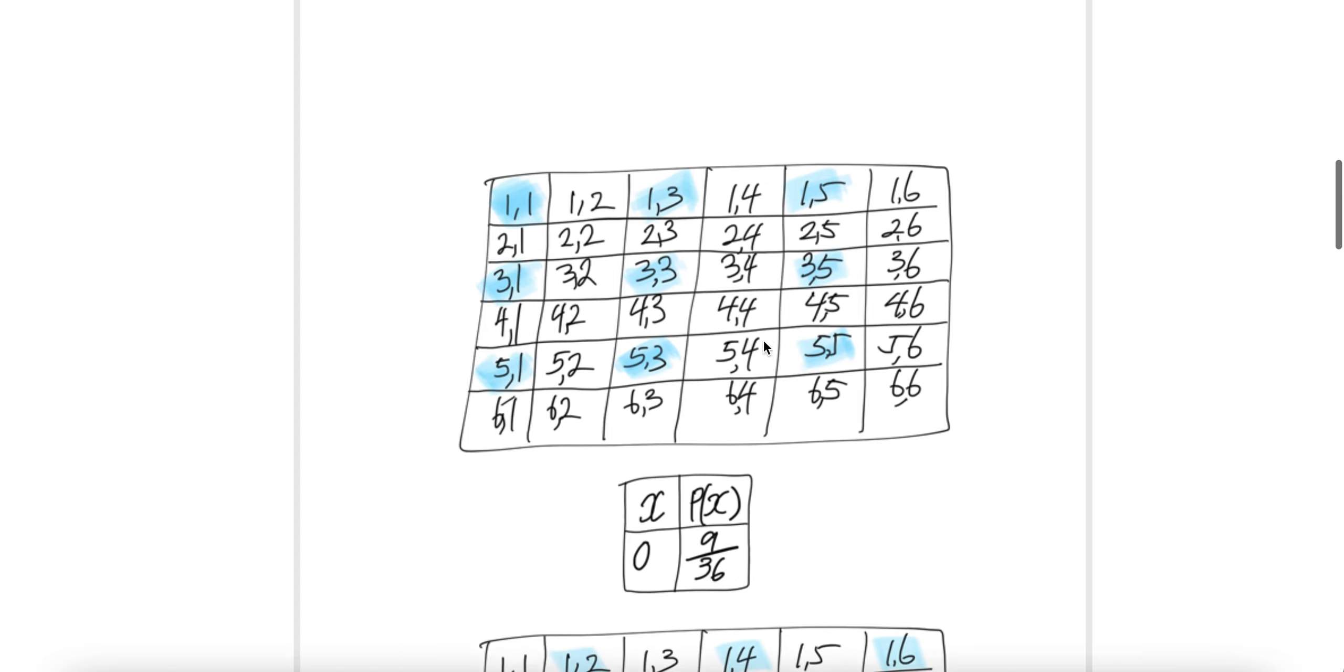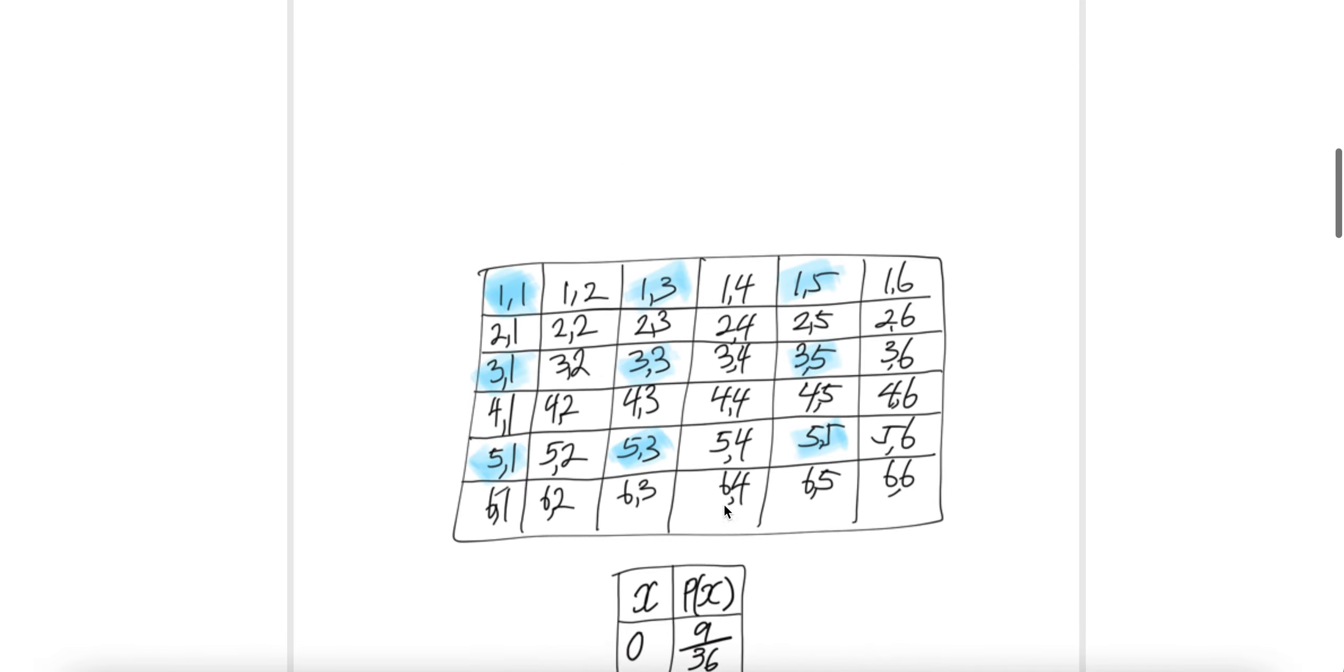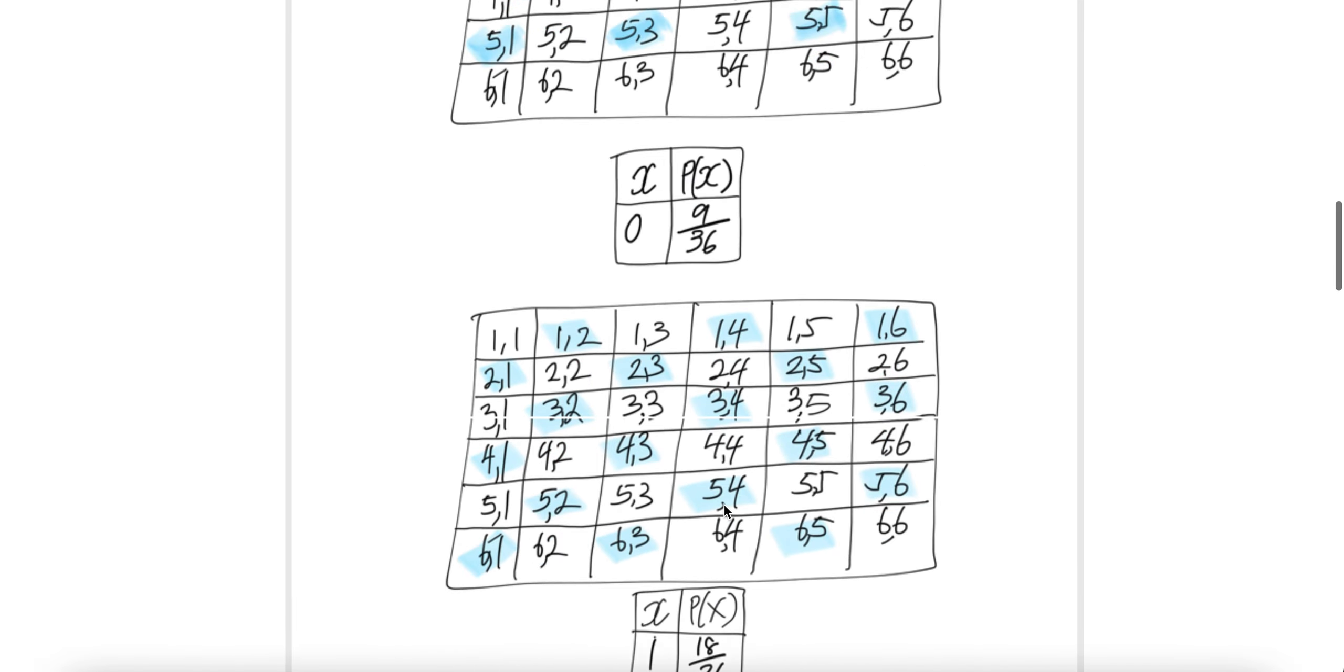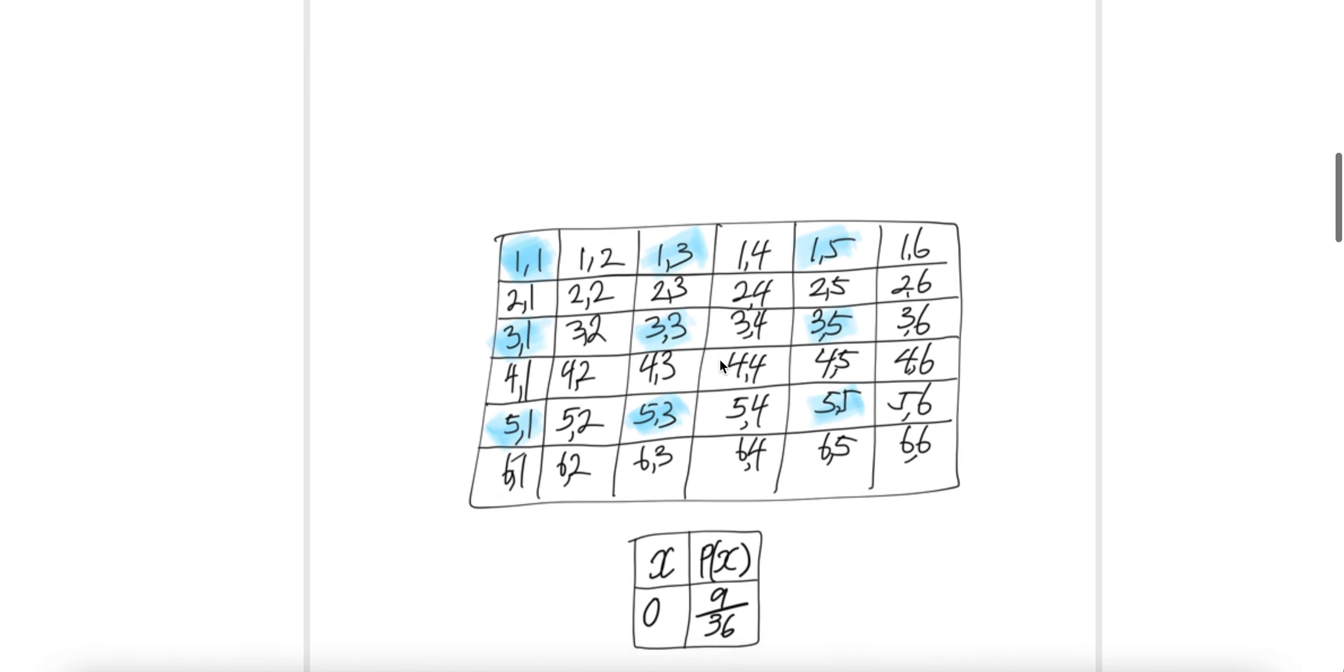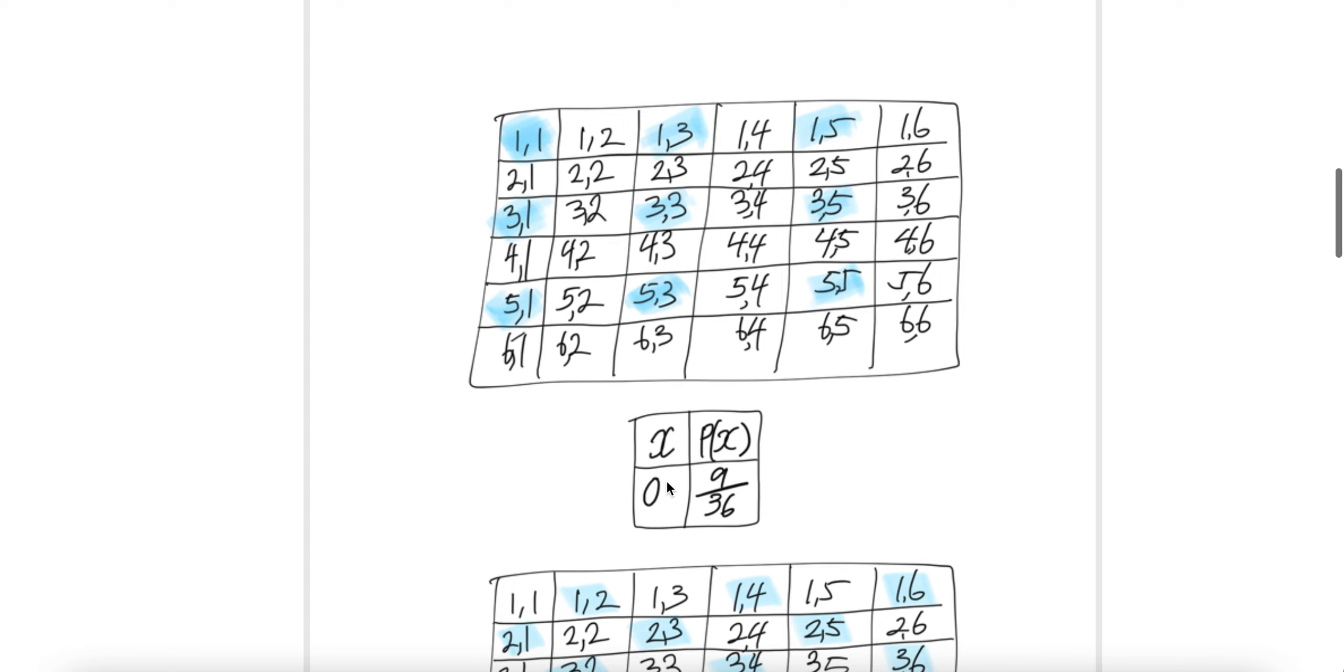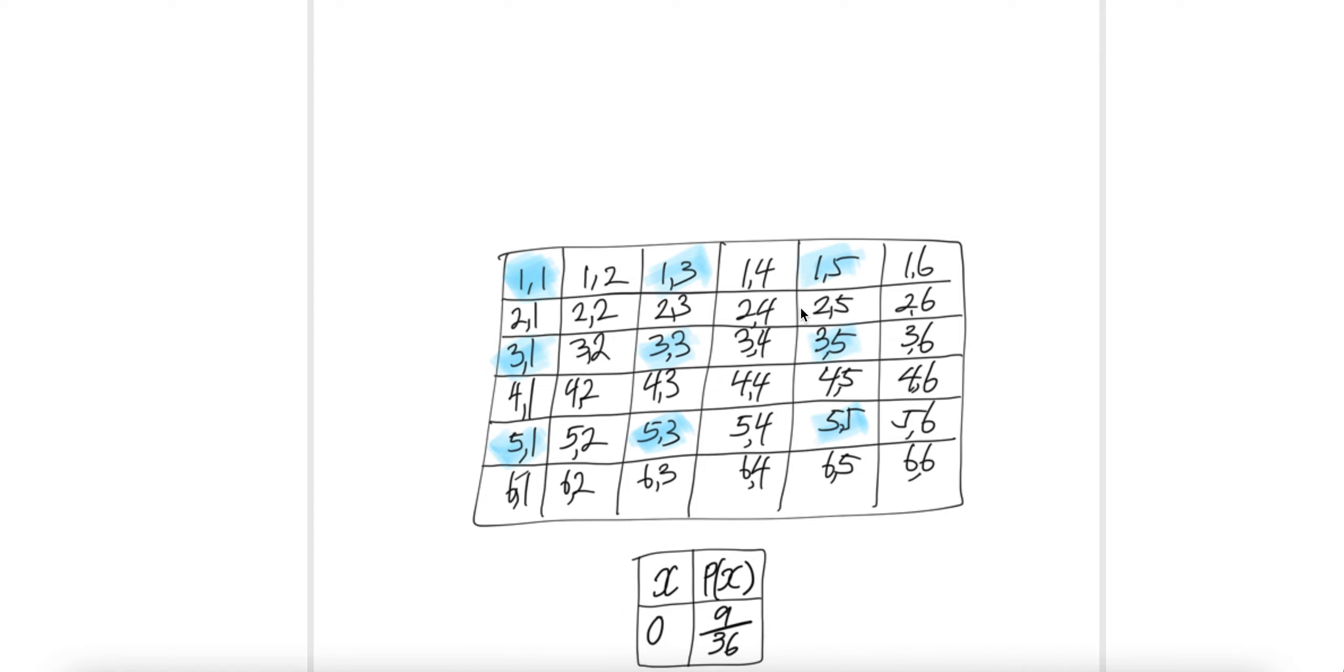Now the probability of zero even. So none of them have even numbers. The ones highlighted by the blue show that neither the first die or second die have an even number. Counting them gives nine outcomes. And the sample space is 36, so nine over 36.